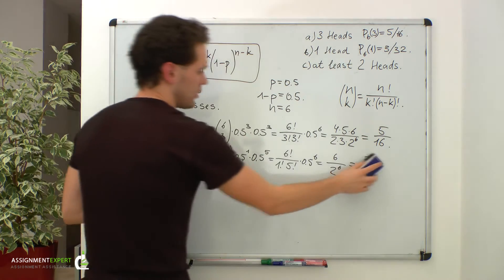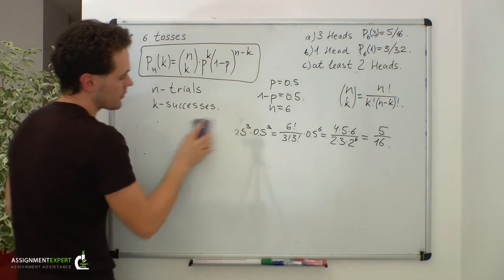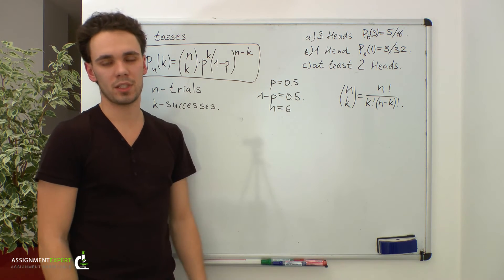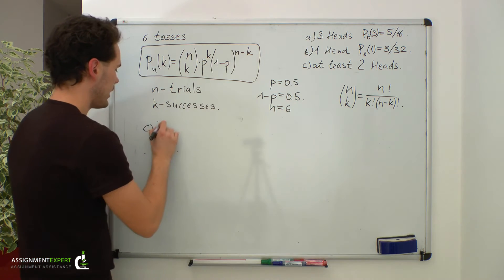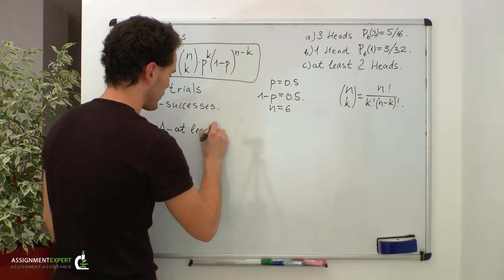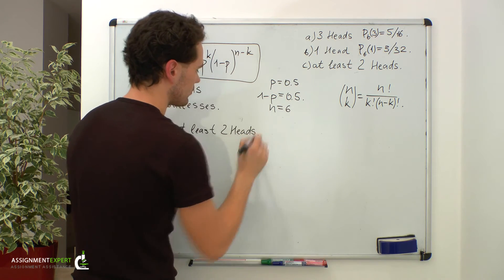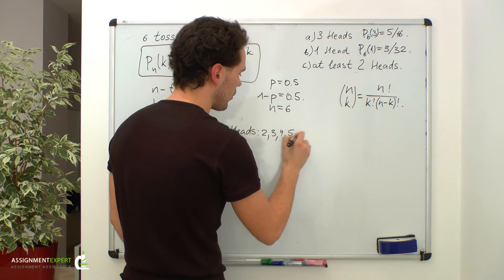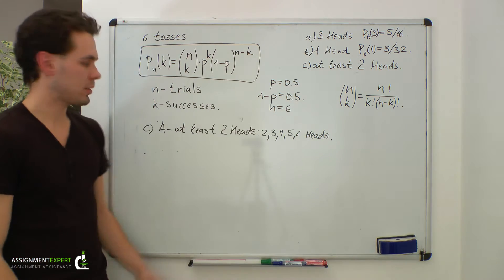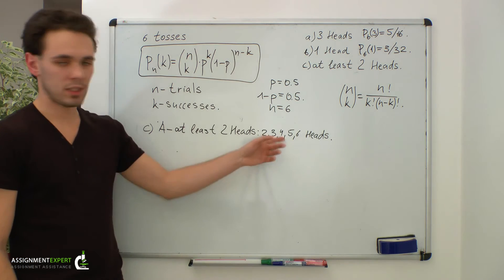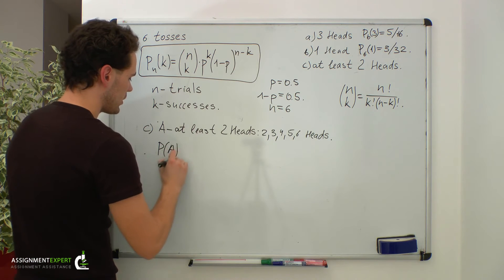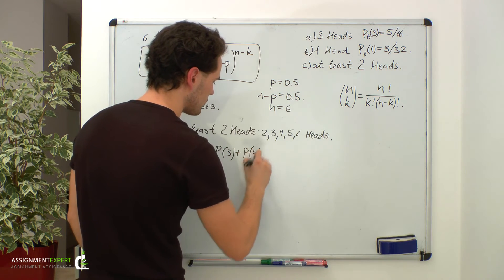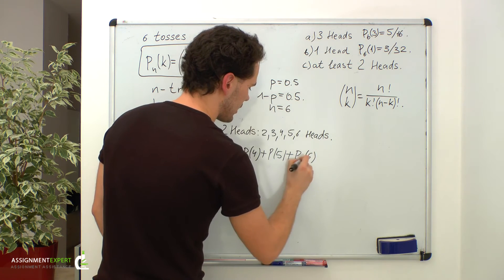Now let's proceed to case C. We need to find the probability of getting at least two heads out of six tosses of the coin. Let event A be getting at least two heads. The phrase 'at least two' means event A occurs if we get two, three, four, five, or six heads. So the probability of event A equals the sum of probabilities of getting two, three, four, five, and six successes out of six trials.